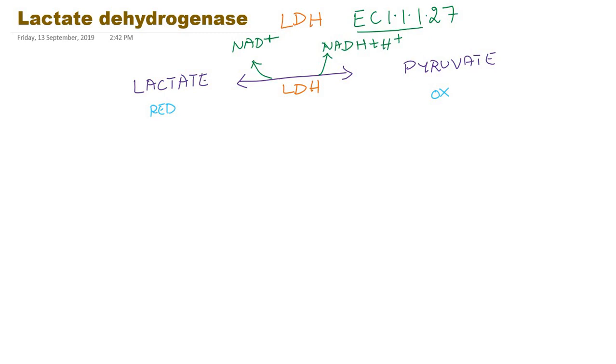I will explain by writing the structure of these two molecules. This is our lactic acid or lactate. You can see here our lactate dehydrogenase will act on this particular functional group CHOH group and the acceptor molecule is NAD plus.